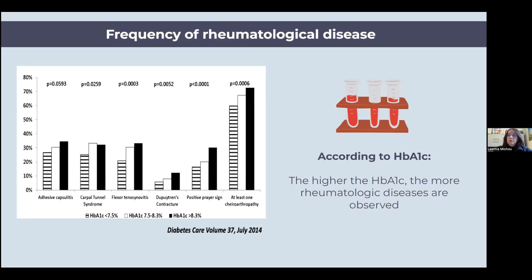These include frozen shoulder and adhesive capsulitis — which is a condition related to chiroarthropathy even though it is in the shoulder — as well as carpal tunnel syndrome, stenosing synovitis of the flexor tendons, Dupuytren's contracture, and the prayer sign, which is related to the diabetic hand. What has been observed in the literature is that the frequency of these conditions is higher when the hemoglobin A1C is higher, so there is a correlation between the control of diabetes and the occurrence of these rheumatic conditions.